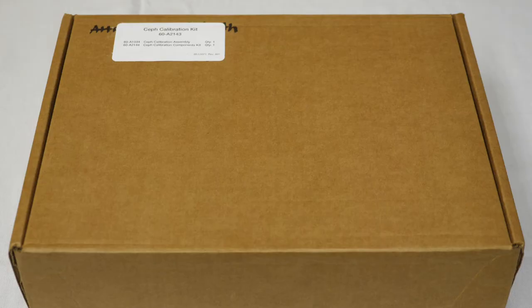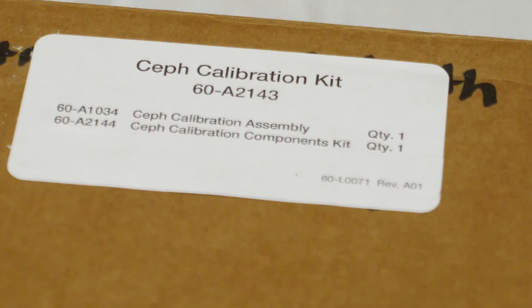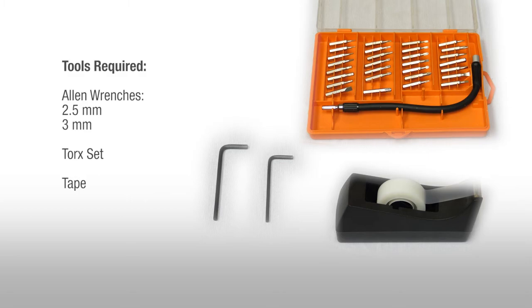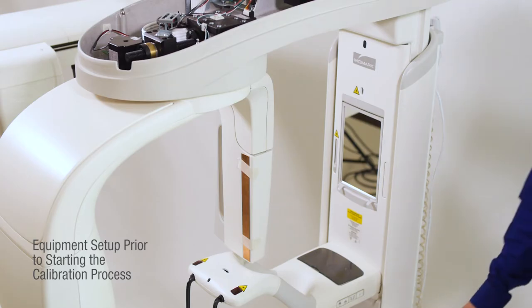To begin, locate the Ceph Calibration Kit and be sure all the items shown are included. Also gather the USB drive with the calibration files for the sensor and the image phantom. Next, gather the tools required: Allen wrench sizes 2.5mm and 3mm, a Torx set, and tape.